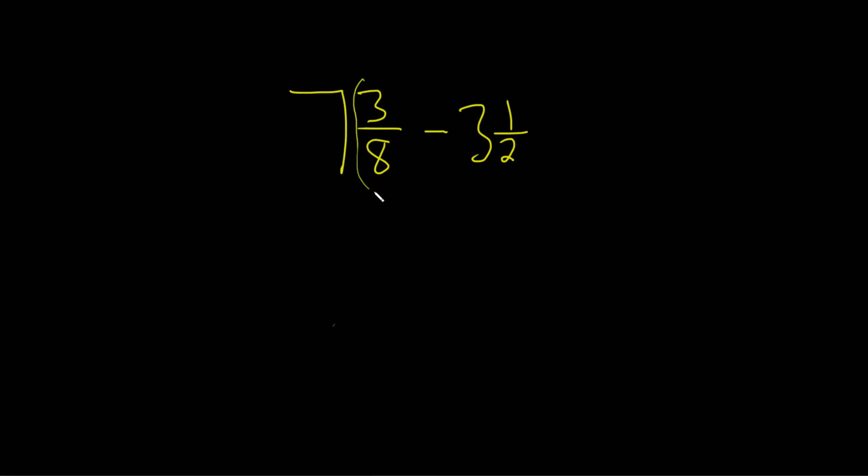So here we have 3 eighths and here we have 1 half. That means the common denominator has to be 8. So what we do is we take the 1 half and we multiply it by a number that will make the bottom 8.